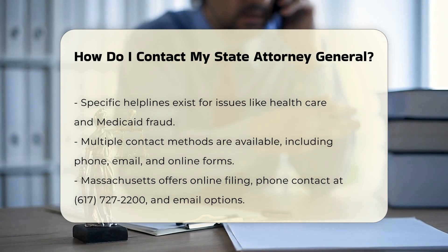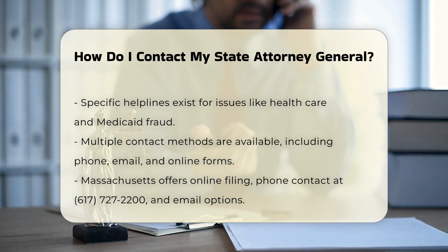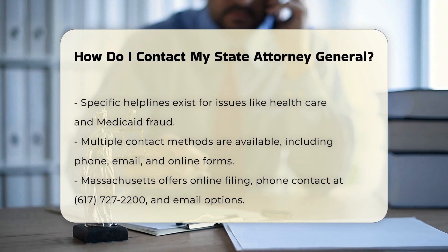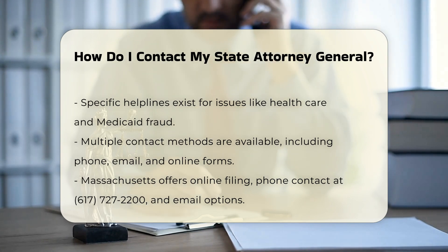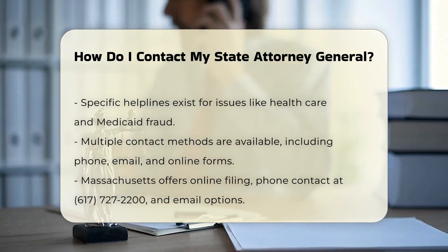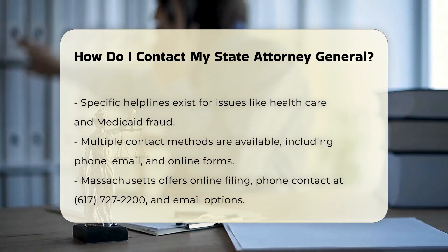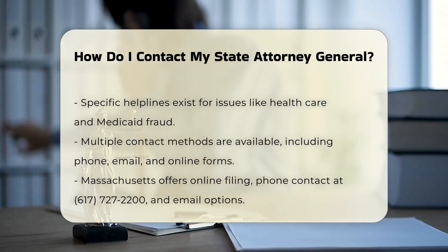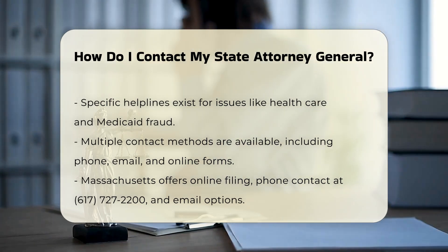Multiple contact methods. Most state attorney general offices offer multiple ways to get in touch. In Massachusetts, you can file online, call the office at 617-727-2200, or email the staff depending on the issue or topic you want to discuss.